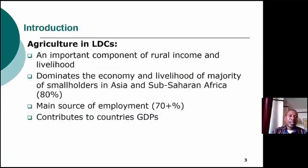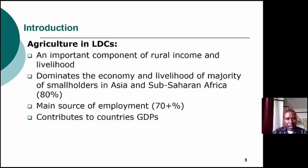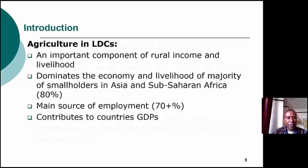To start with, let's look at agriculture in general. We all understand that it's an important component of rural income and livelihood, and it dominates the majority of livelihoods in sub-Saharan Africa and South Asia. Almost 80% of smallholder farmers depend on agriculture, and it's also the main source of employment to more than 70% of the population, contributing significantly to GDP.